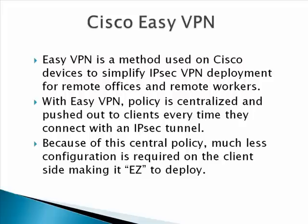EasyVPN's whole idea is that you centralize policy for your VPN connections on a central head-end device, maybe at your corporate office or data center. That policy can then be pushed out to clients when they connect. The clients have just 6 or 10 lines of configuration on them, which makes it a lot easier to roll out clients. This is particularly helpful when you've got a lot of remote access clients as well as, say, 200 branch offices — you can pre-configure 800-series routers, send them out, and all the person has to do is plug them in.